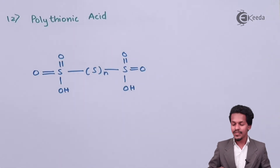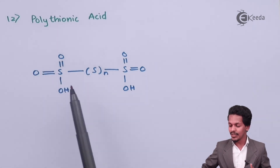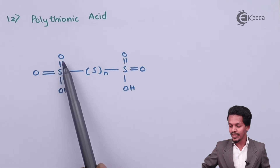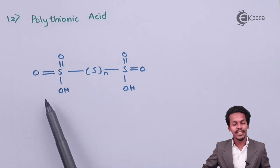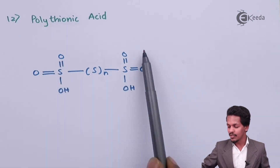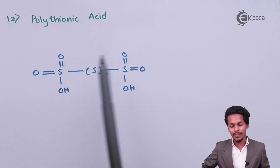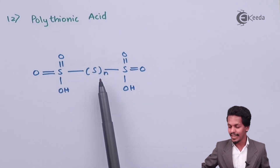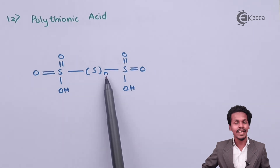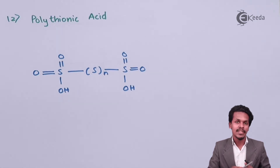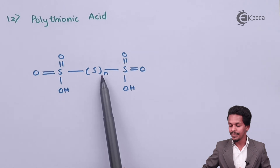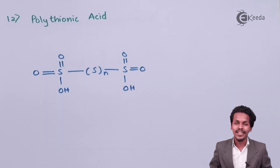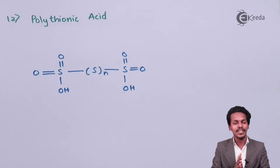The last one is polythionic acid. In this structure, sulfur is attached to two oxygen atoms with double bonds; one valency is satisfied by OH. Two such similar groups are present, and they are connected via multiple sulfur atoms — represented as 'n' — meaning multiple sulfur groups can be attached. This concludes the discussion of the oxoacids of sulfur.